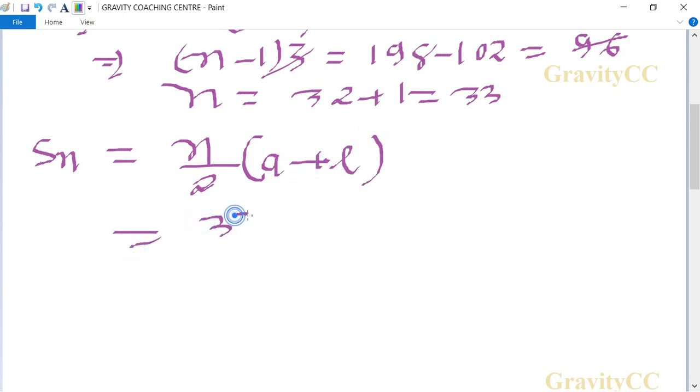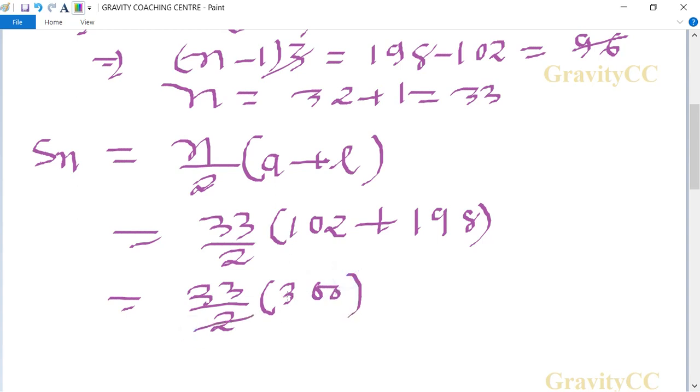N is 33 upon 2, first term is 102 plus last term is 198, equal to 33 upon 2 bracket of 300. Cancel by 2, so 150 into 33 equals 4950.